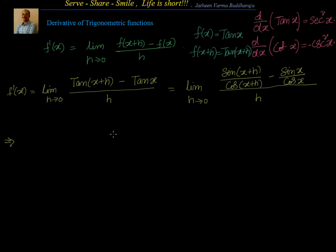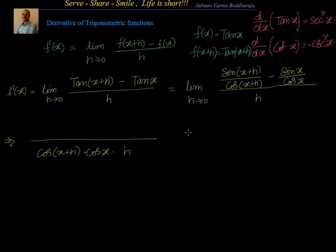Taking the LCM, we get: [sin(x+h)·cos(x) - cos(x+h)·sin(x)] in the numerator, and cos(x+h)·cos(x)·h in the denominator.